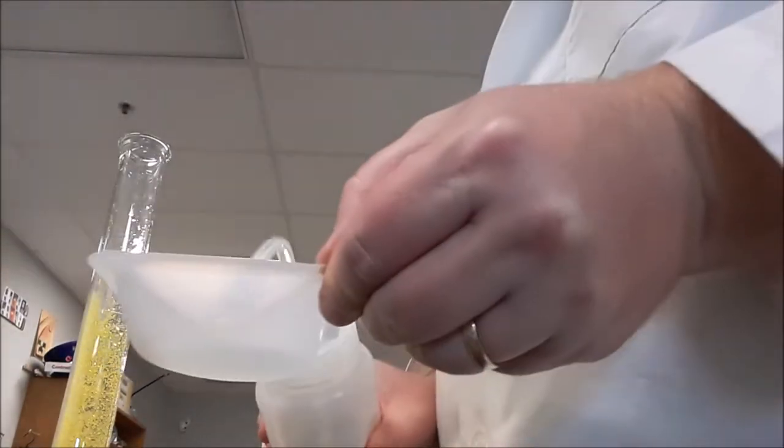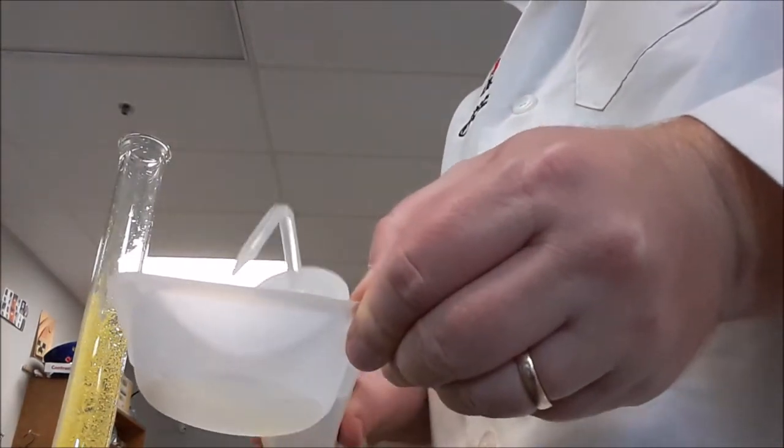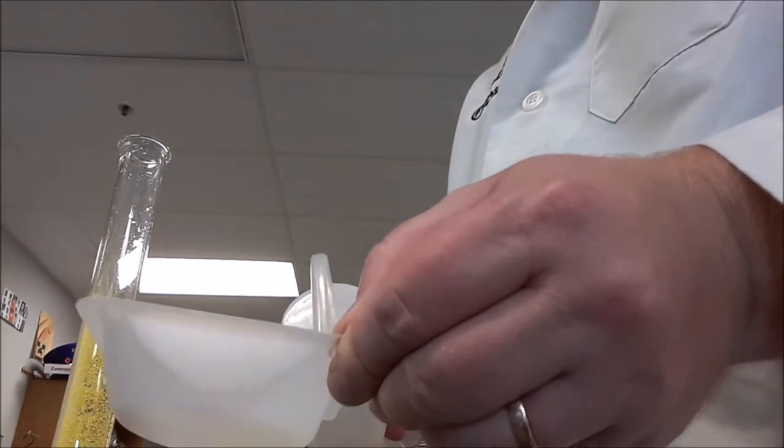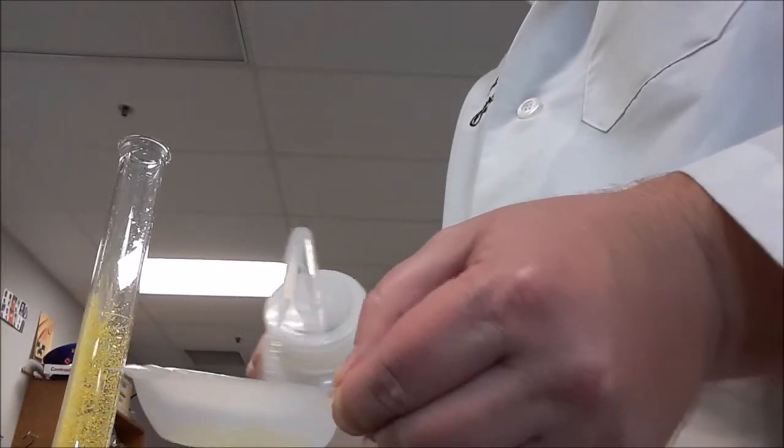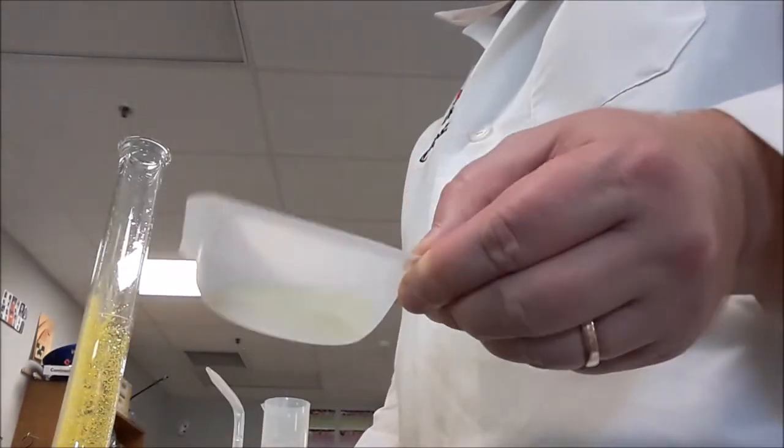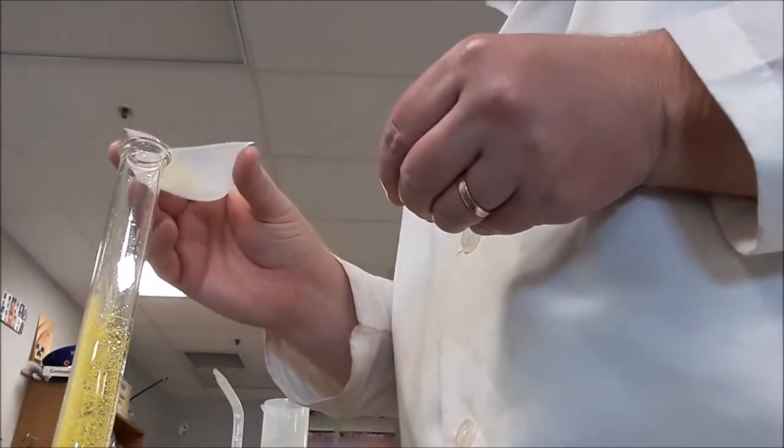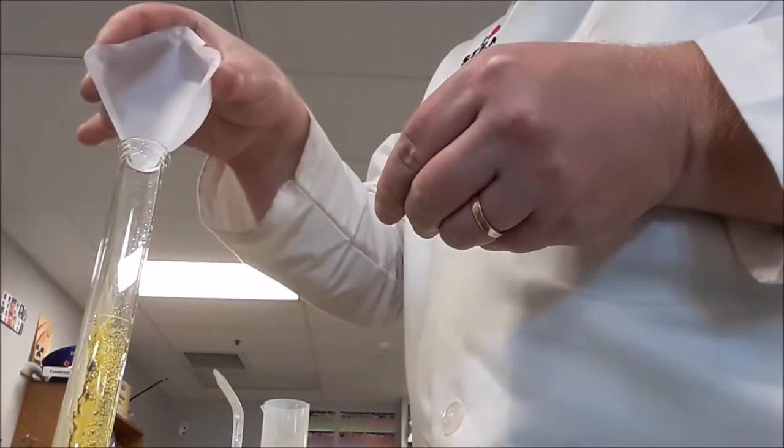Now, if that still didn't get all of it out, the next thing I can do is take a DI wash bottle and I can rinse the weigh boat with the DI wash bottle, rinsing out the sides and then swirl it all out. And then kind of swirl it around like I'm panning for gold. And then I can take that little bit and I can dump that in the volumetric flask as well.